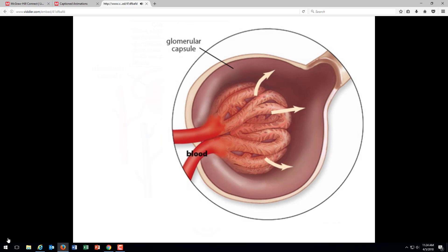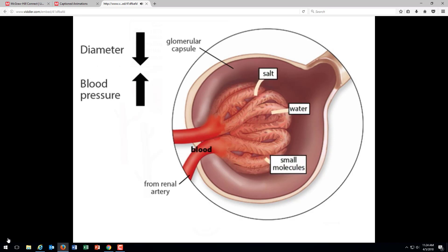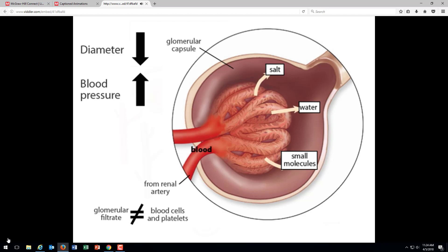The blood entering the glomerulus is coming from the renal artery and is therefore under pressure. As the blood enters the glomerulus, the diameter of the capillaries decreases, further increasing the pressure and forcing the compounds indicated here from the capillary into the glomerular capsule. This solution of compounds is commonly called the glomerular filtrate. Note that the non-filterable components, such as blood cells and platelets, are not forced into the glomerular capsule and therefore should not normally be found in the urine.